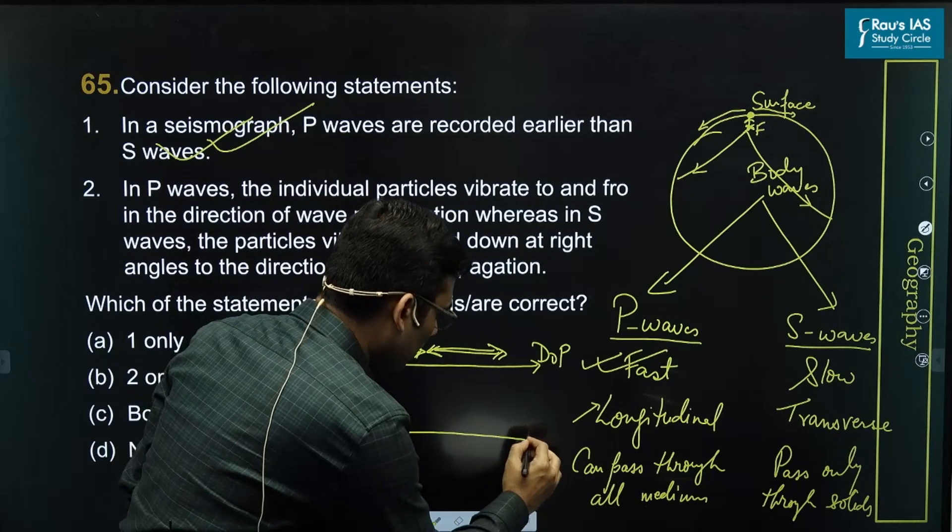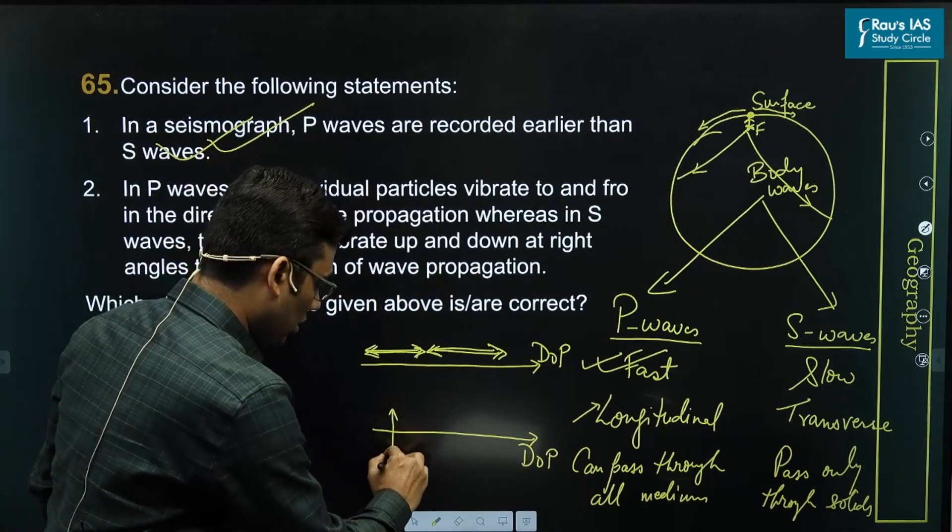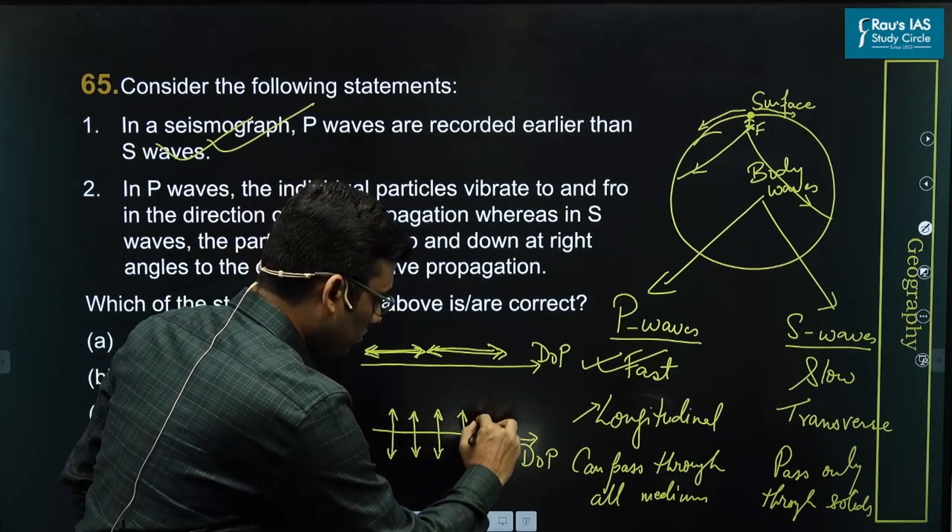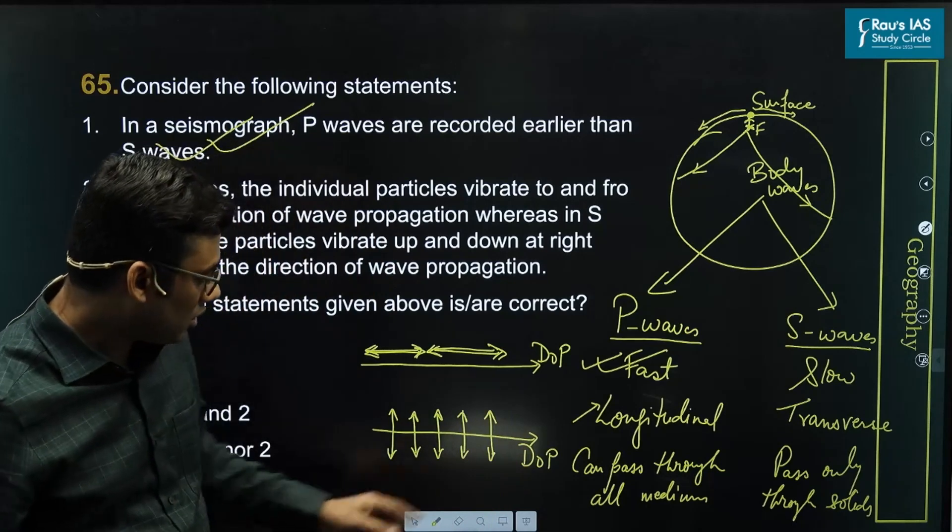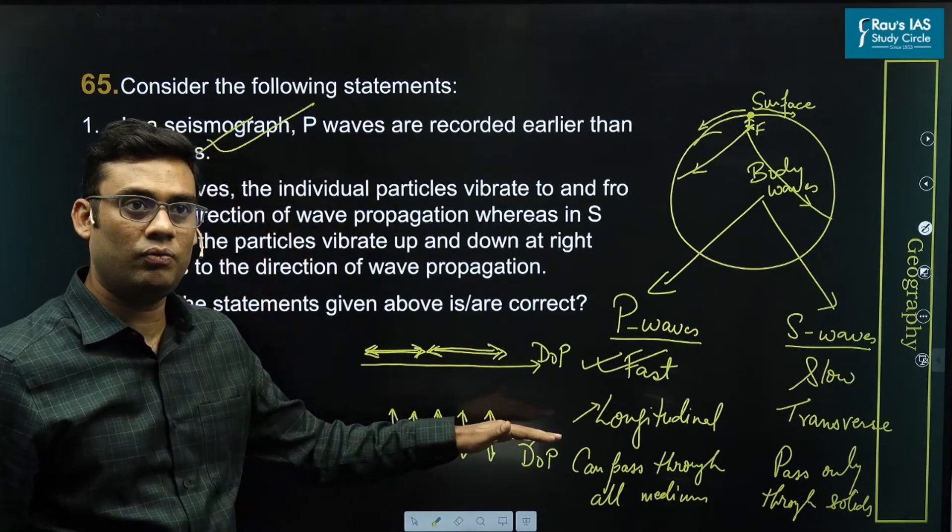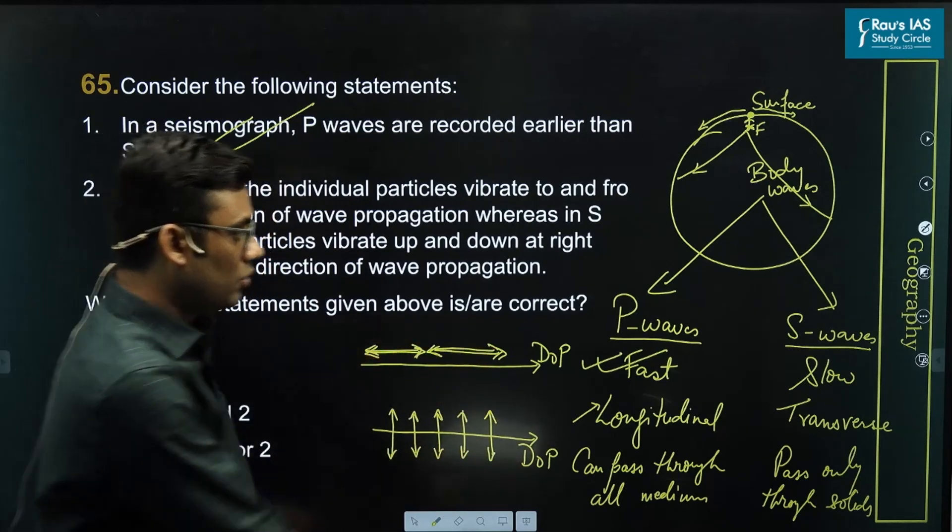Whereas in case of transverse waves, if this is the direction of propagation, the vibration of particle takes place in this pattern, which means the vibration of particle is perpendicular to the direction of propagation up and down. To and fro.